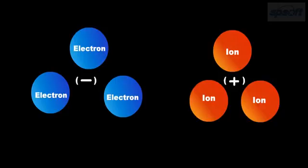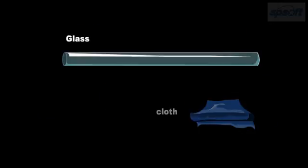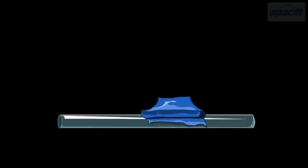Materials such as glass, fur, and cloth acquire an electric charge by rubbing them against each other, a process which tears electrons off one substance and attaches them to the other.